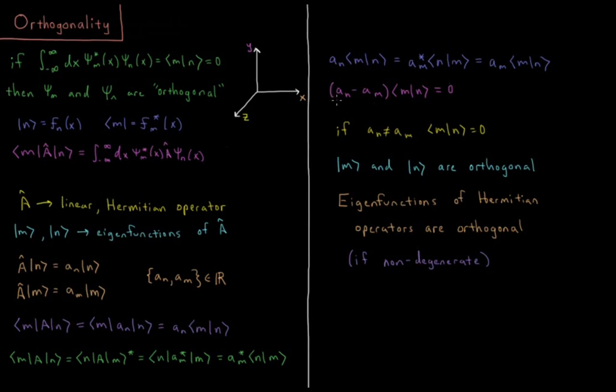So this is going to give us that (a_n - a_m), if we move these both over to the same side, (a_n - a_m) times the integral overall space of ψ*_m ψ_n is equal to zero.